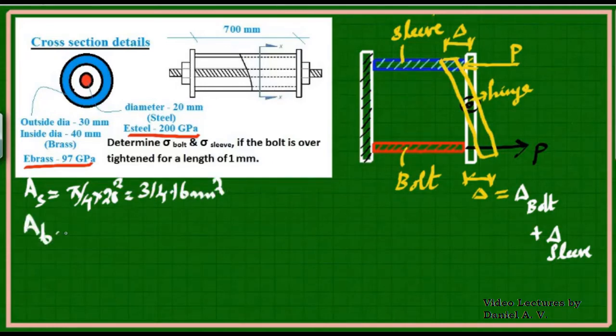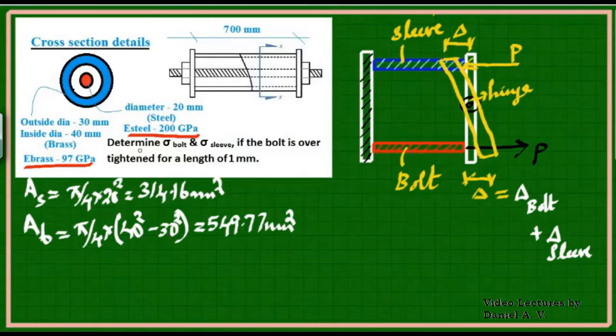Similarly, area of brass is π/4 × (40² - 30²), which gives 549.77 mm². I have the areas and E values. Now I can use the relationship: total deformation = delta bolt + delta sleeve. The total deformation is given as 1 mm, so 1 mm = delta bolt + delta sleeve.